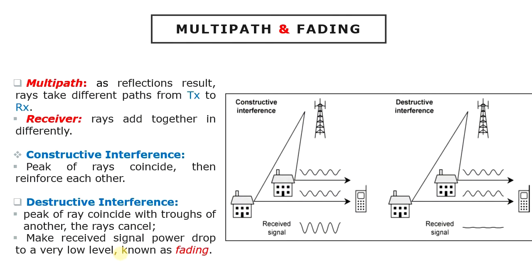Propagation laws and noise are not the only problem. As a result of reflections, rays can take several different paths from the transmitter to the receiver. This phenomenon is known as multipath. At the receiver, the incoming rays can add together in different ways, which are shown in this figure.